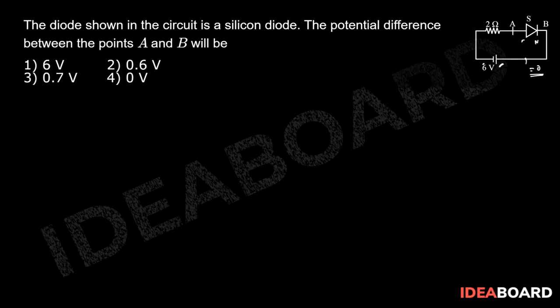So the diode will act as an open circuit. The potential difference across A and B will be equal to 6 volts. So option number first is the correct answer of this problem.